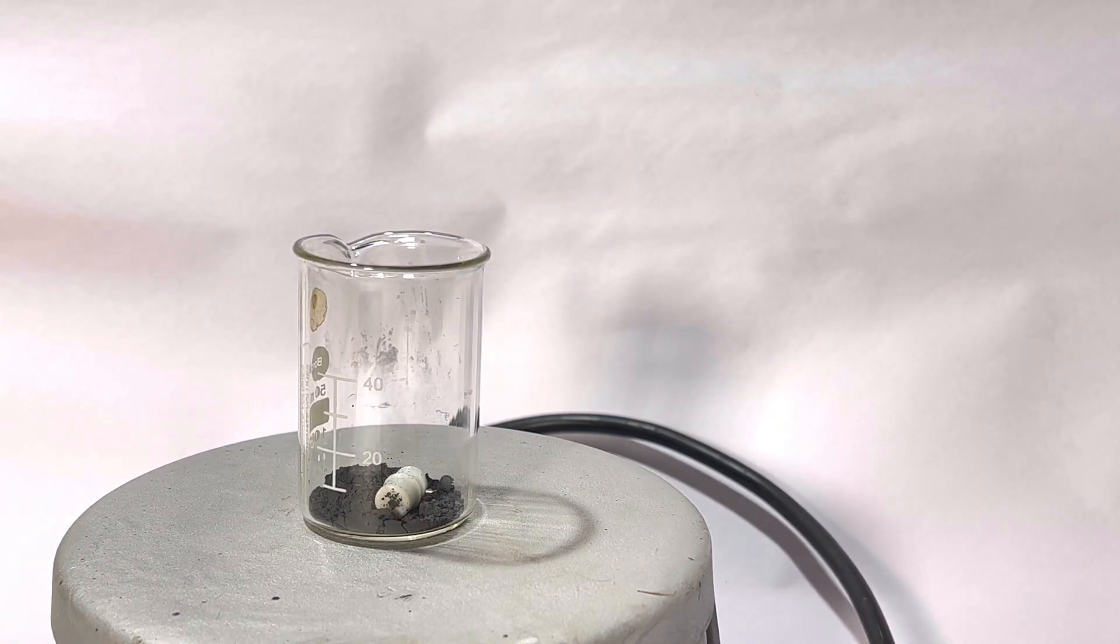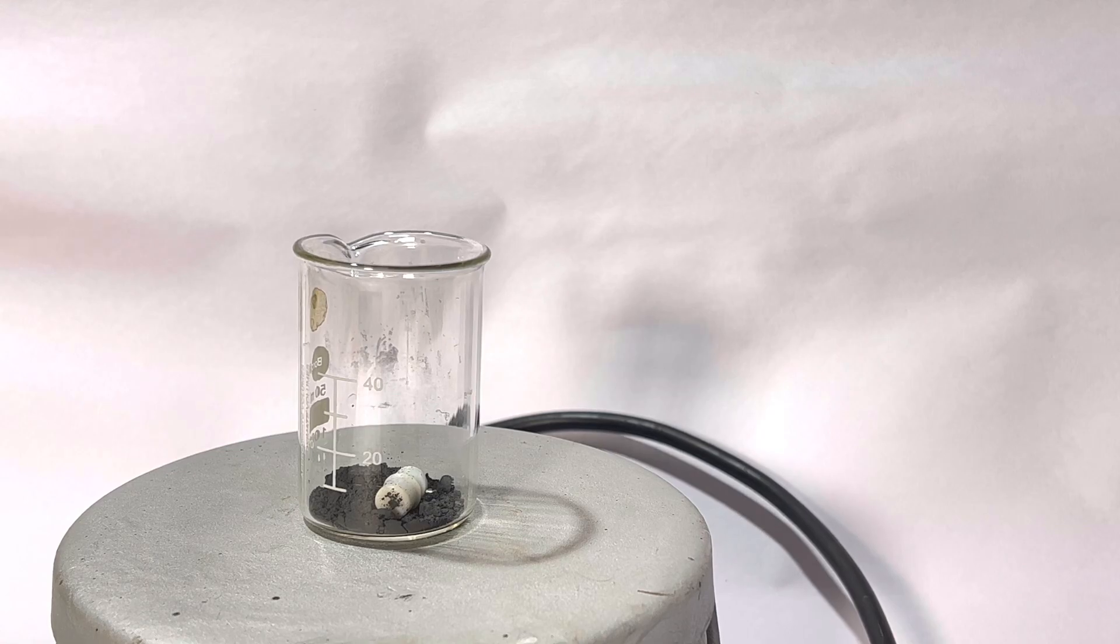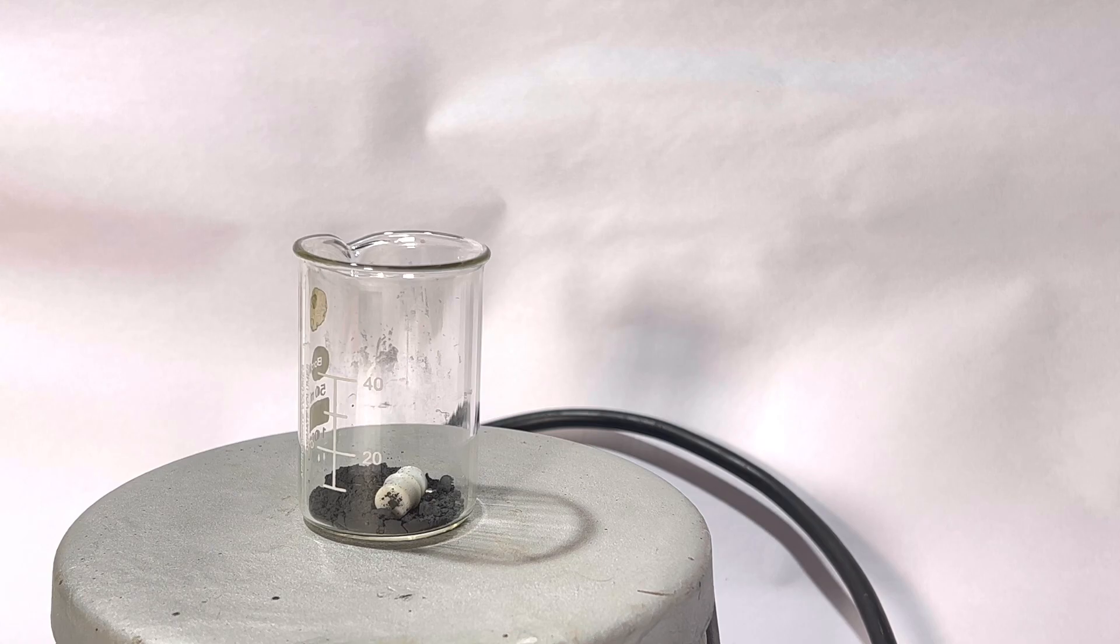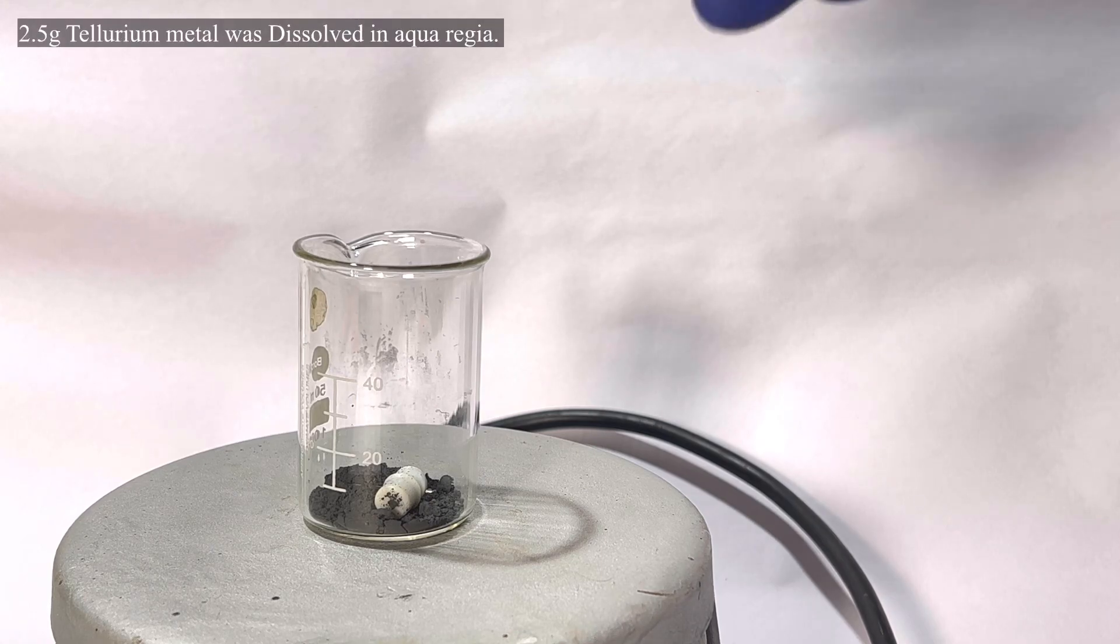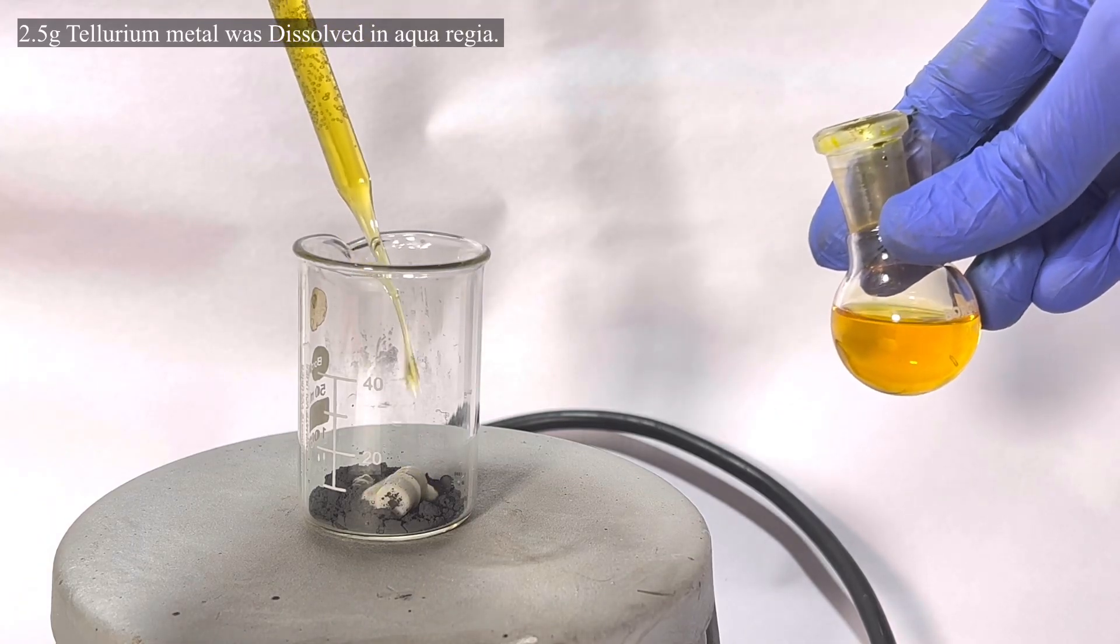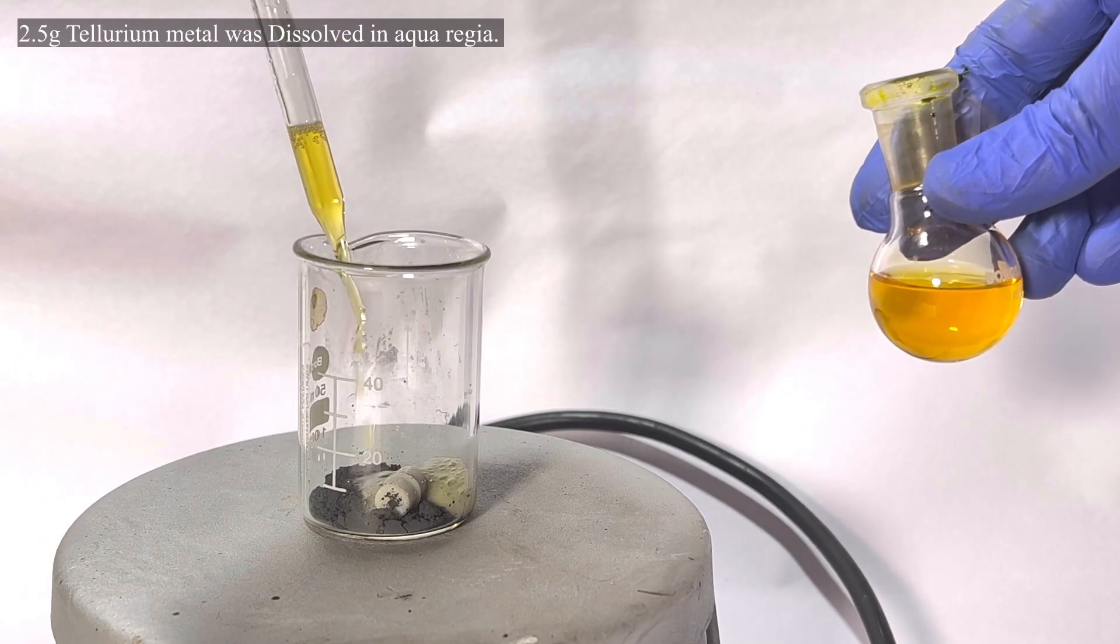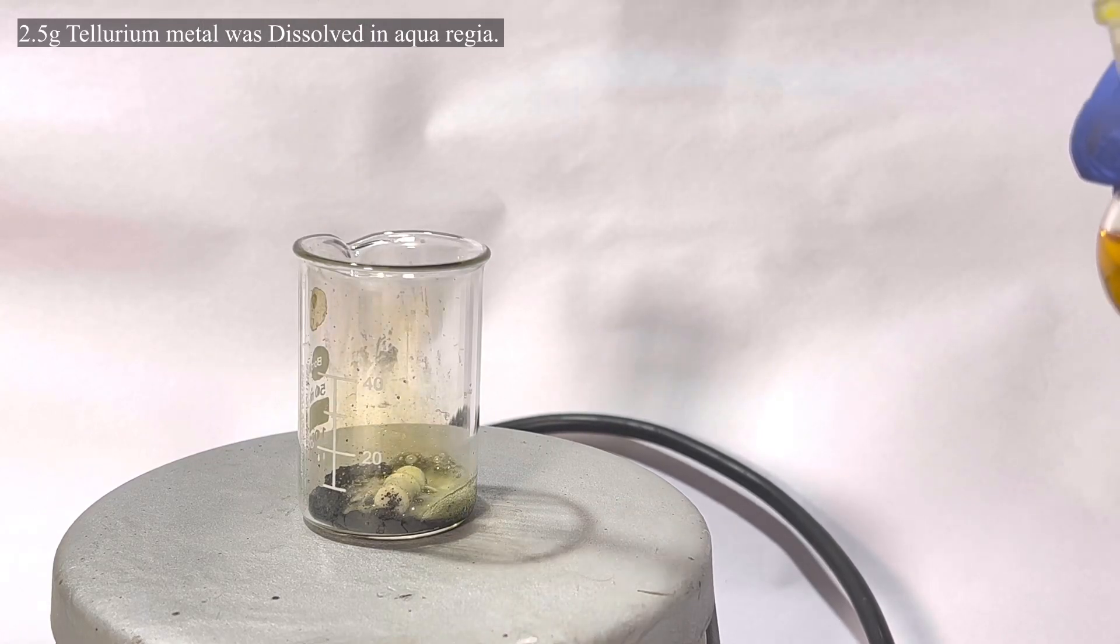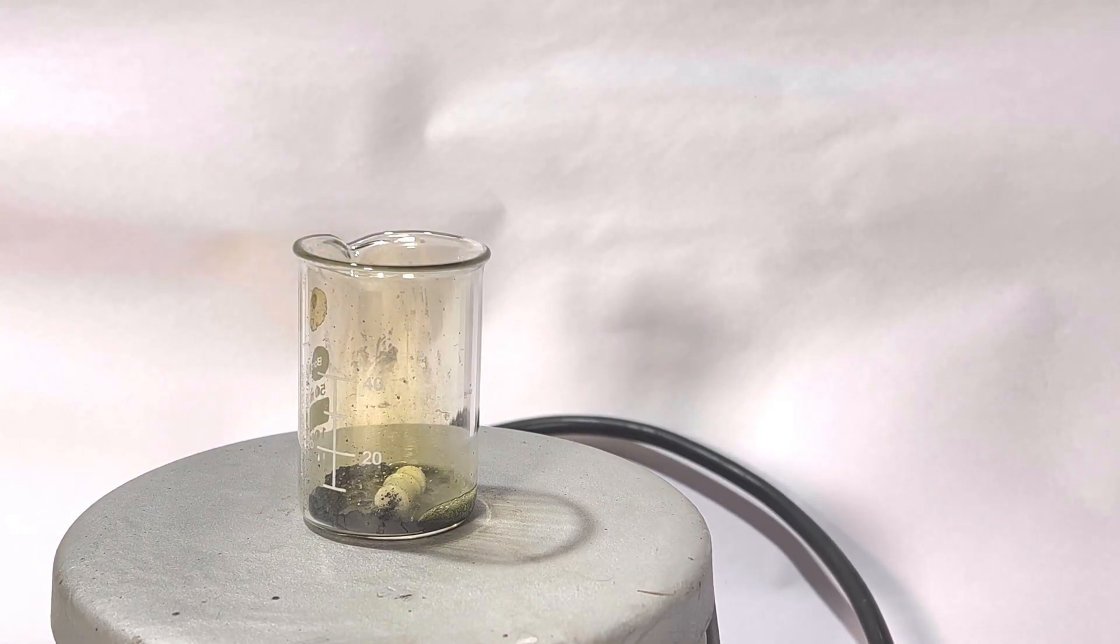Here you can see me using a small 25 milliliter beaker. This was a mistake on my part and I recommend you guys use a bigger beaker or an Erlenmeyer flask. Next, add the aqua regia to the beaker. Immediately you see the reaction commencing with the evolution of brown fumes of nitrogen dioxide.